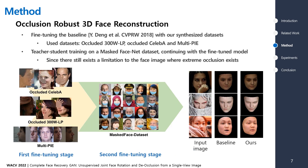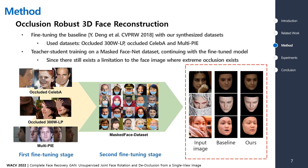First, for occlusion robustness, we do two-stage fine-tuning from our 3D face reconstruction baseline. These results show the effects of our training method on natural occluded face images.